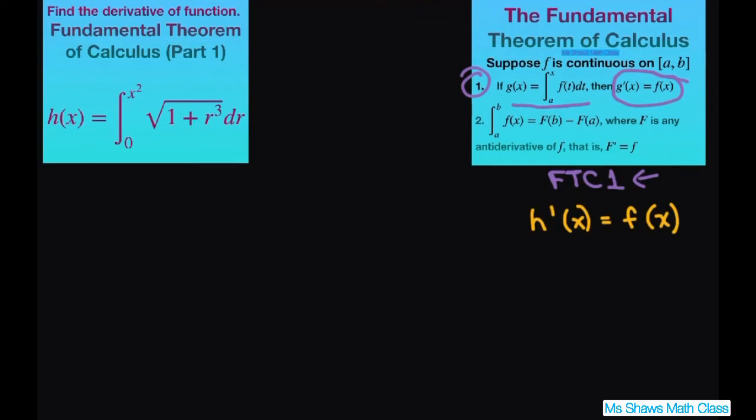The problem is this upper limit should be X, and we have X squared. So I'm going to have to use U substitution. Our A happens to be 0, so that's no problem with that one. It's just this upper limit that has to match this formula.